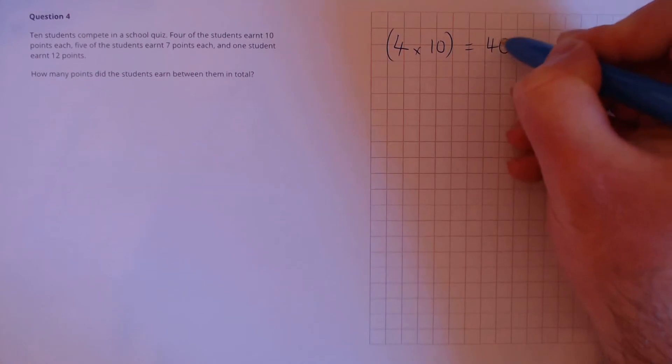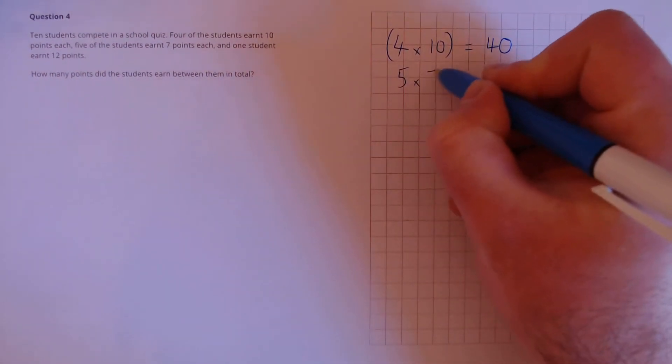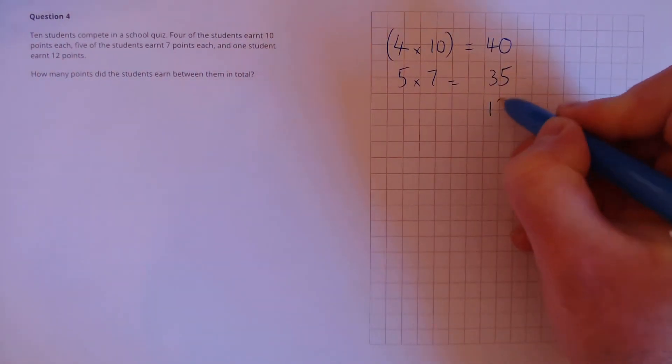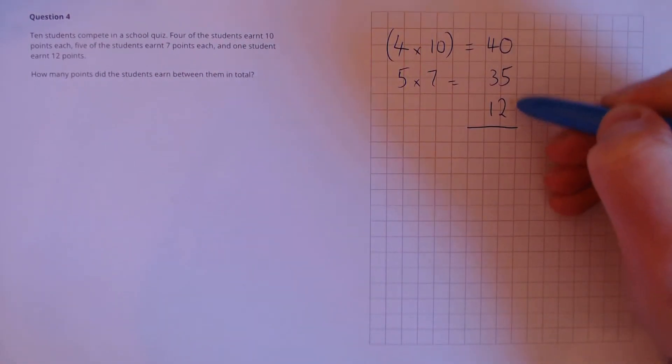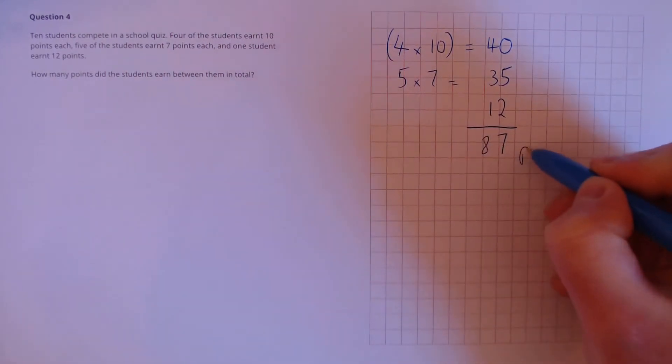4 students earn 10 points. That's 40. 5 students earn 7 points, which is 35. And 1 student earn 12 points. Finally, we just need to add these up. 0 plus 5 plus 2 is 7. And 4 plus 3 plus 1 is 87 points.